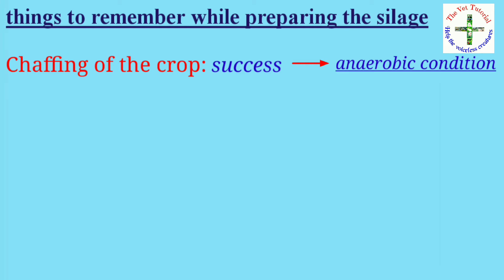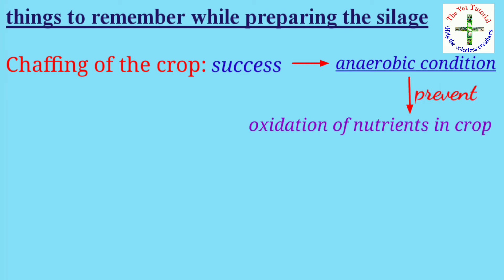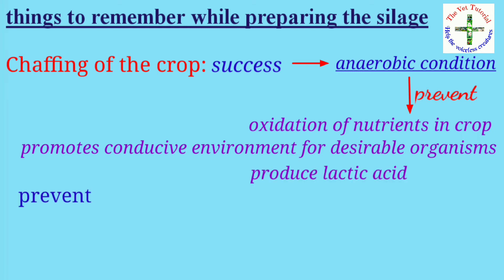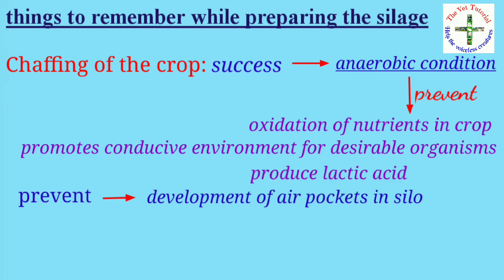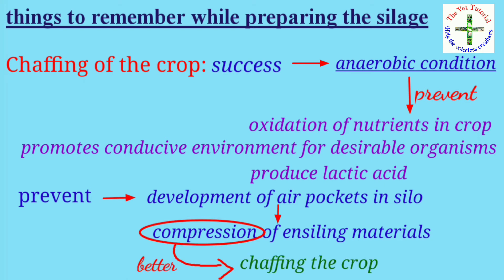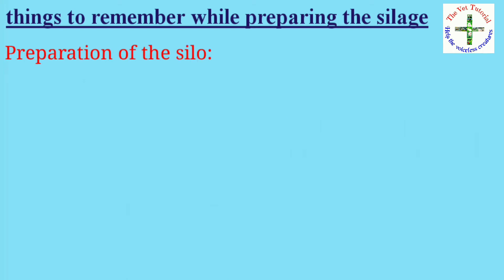Fourth is chaffing of the crop. The success of silage depends on the ability to provide anaerobic conditions in the silo. Anaerobic conditions prevent oxidation of nutrients and promote a conducive environment for desirable organisms to survive and produce lactic acid. To prevent air pockets, compression of the ensiling material is important, and compression is achieved better by chaffing the crop.